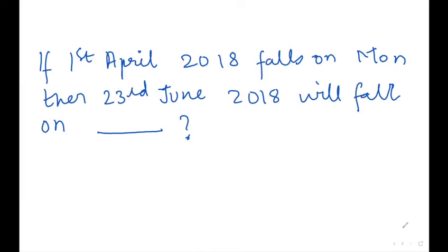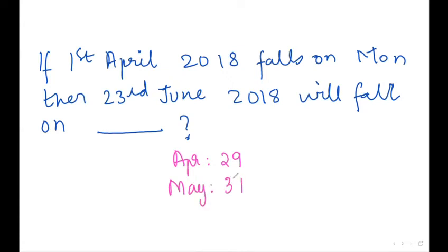In April, one day is already gone. April has 30 days, so 30 minus 1 gives 29 days remaining for April. For May, we consider the full 31 days, since we are concerned with all 31 days of May.